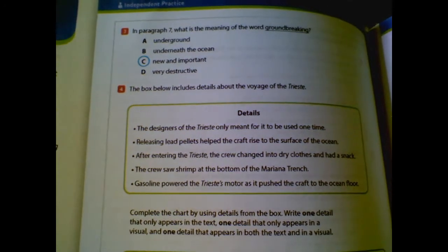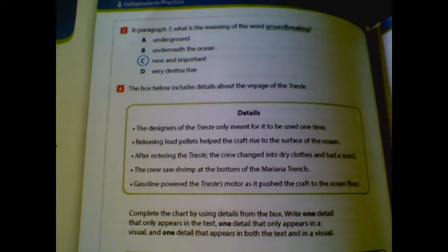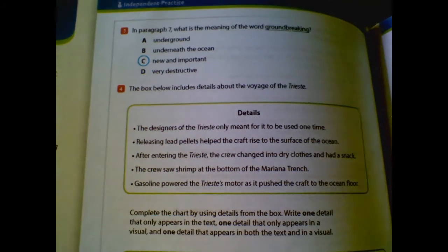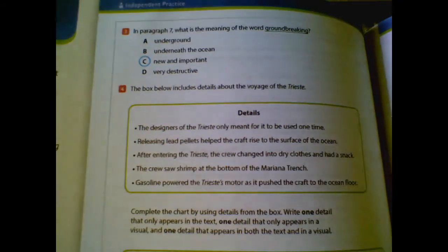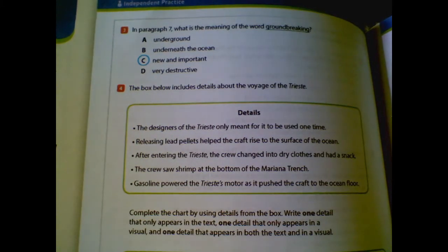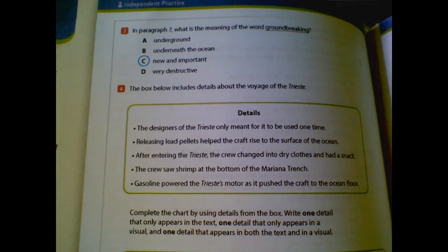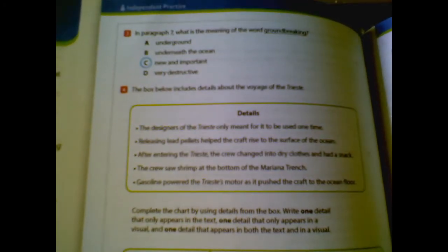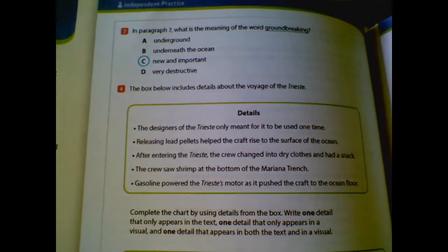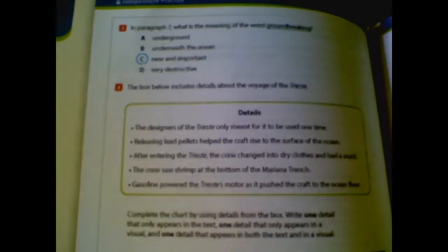Number four. The box below includes details about the voyage. And they give you five details. Complete the chart by using details from the box. Write one detail that only appears in the text, one detail that only appears in a visual, and one detail that appears in both the text and the visual. So these were some examples that they gave.